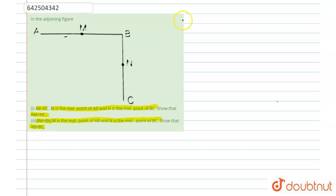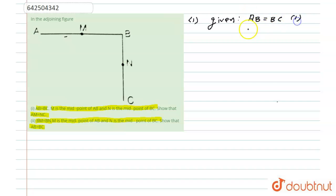So let's approach the solution. For the first part, it is given that AB is equal to BC. And since M is the midpoint of AB and N is the midpoint of BC, we can write that AM is equal to half of AB, which implies that AB is equal to twice of AM.